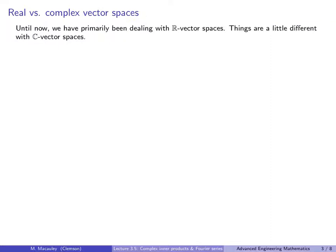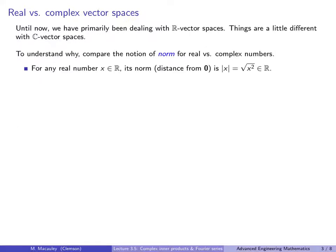Now let's discuss important differences between real and complex vector spaces. Until now we've dealt primarily with real vector spaces. The difference comes into play with inner products. For any real number x, its norm is the absolute value of x, which is √(x²) — a non-negative real number. For any complex number Z = a + bi, its norm is defined as √(Z · Z-bar), which equals √(a + bi)(a − bi) = √(a² + b²).